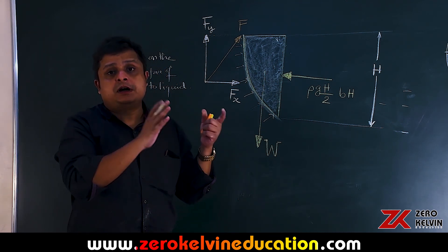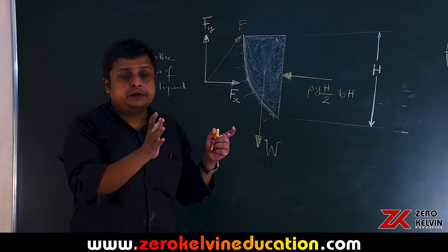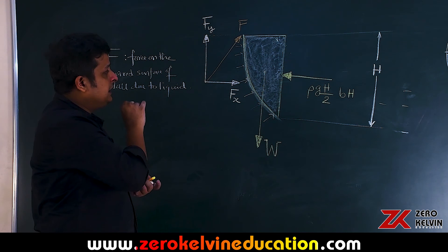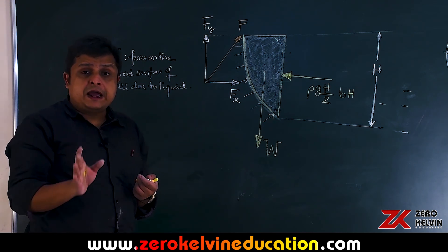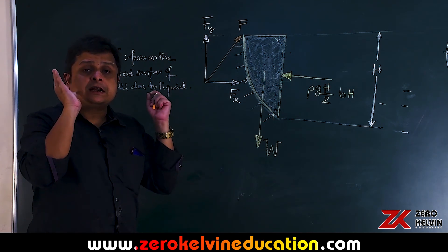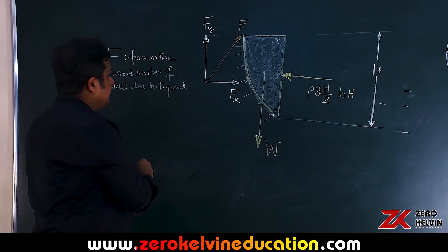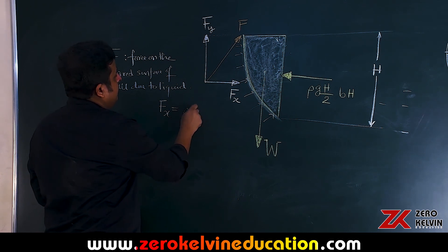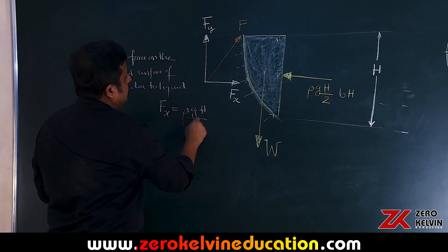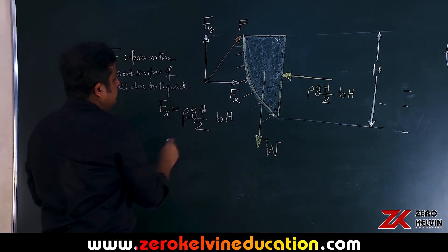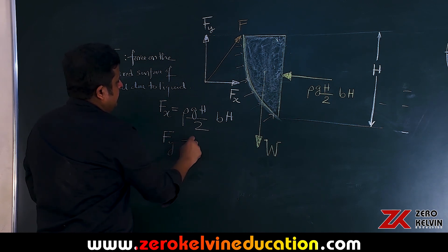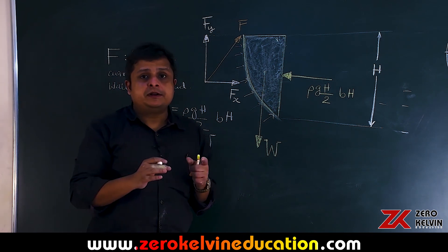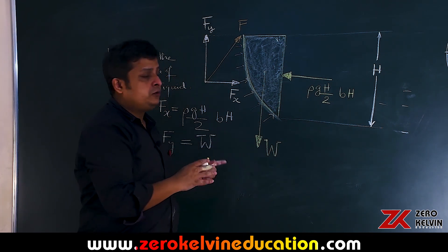This is how we solve this complicated problem of hydrostatic force due to liquid pressure on a curved surface — no integration is required. If you choose a proper free body diagram of a certain portion of the liquid: Fx = rho·g·(H/2)·D·H, and Fy = W. The shape and details will be given so that you can calculate W.